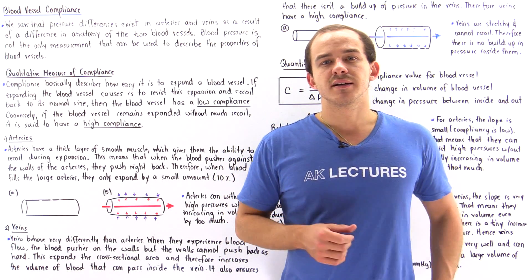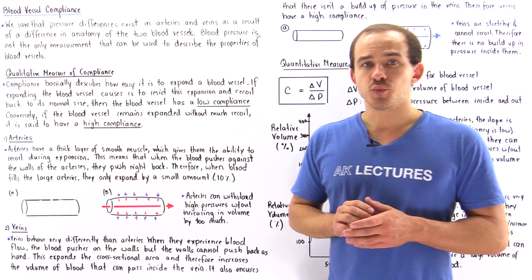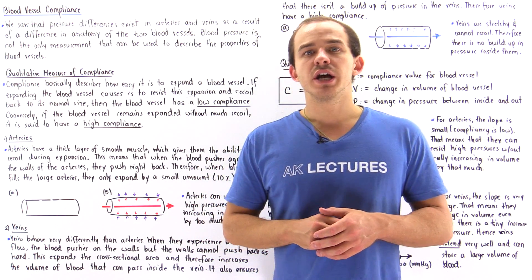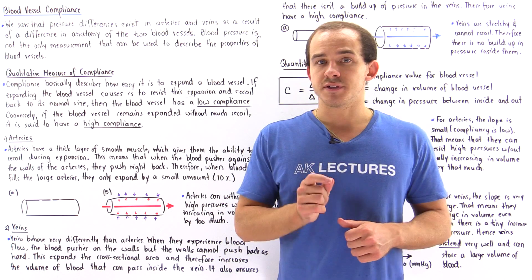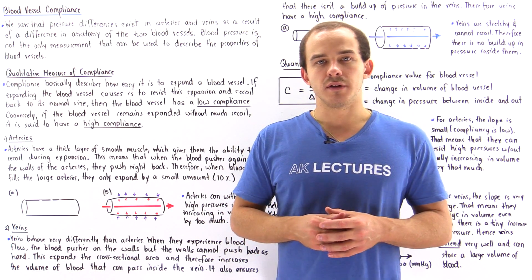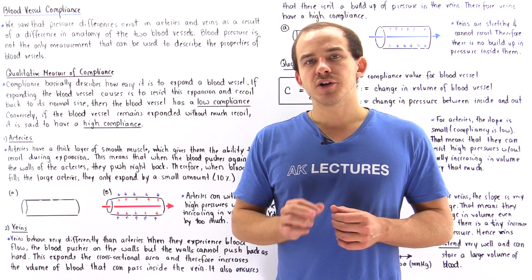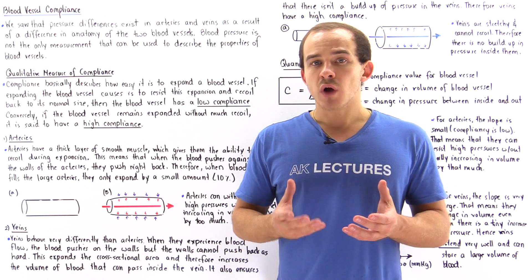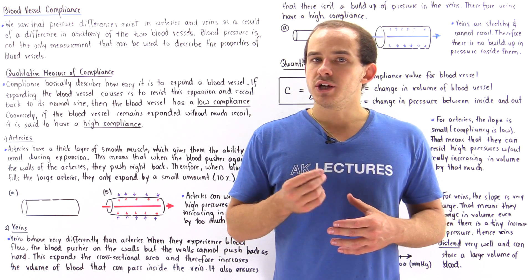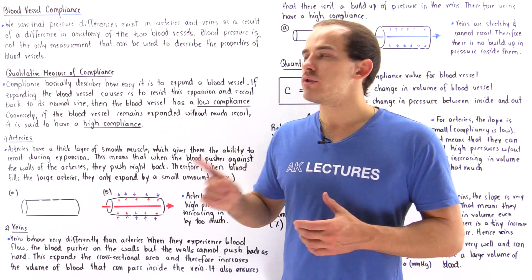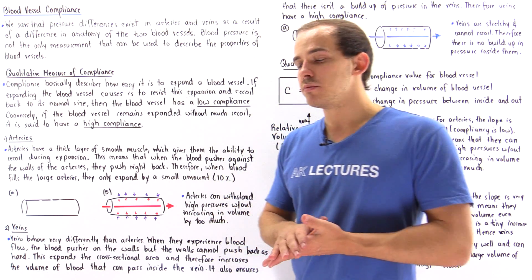Previously we discussed the concept of blood pressure, and we said that inside arteries we have a much higher blood pressure than inside our veins, because of a difference in structure of the two different types of blood vessels. Blood pressure is not the only measurement we can use to describe the properties and behavior of blood vessels — we can also use a measurement known as compliance.